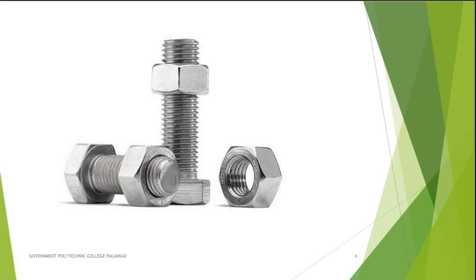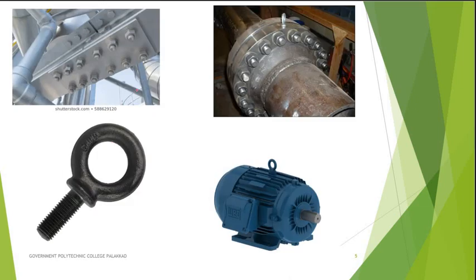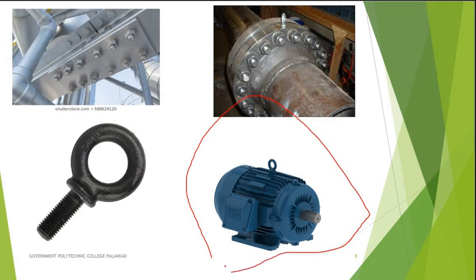For example, we have two shafts connected to metal plates. The bolt is used as an eye bolt. We have different applications of a bolted joint. For instance, consider an electric motor — this is the electric motor with a threaded portion.